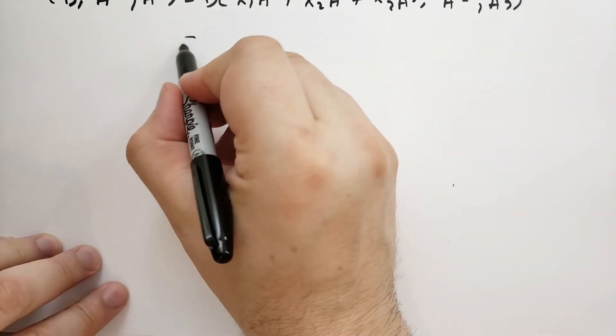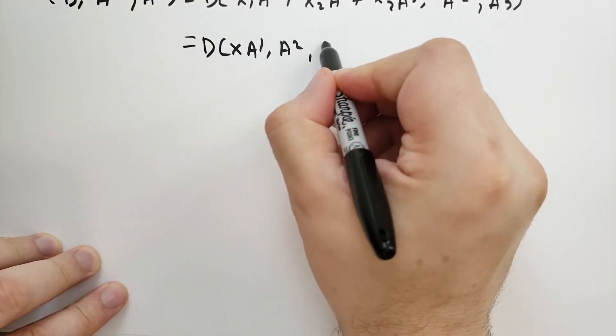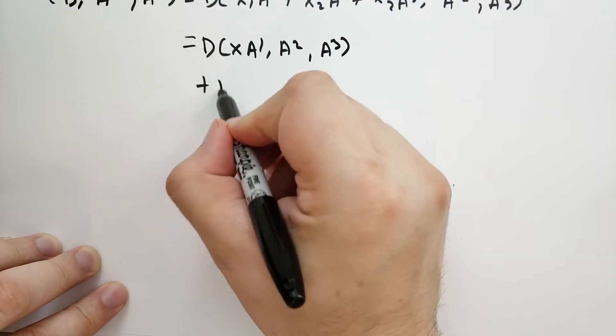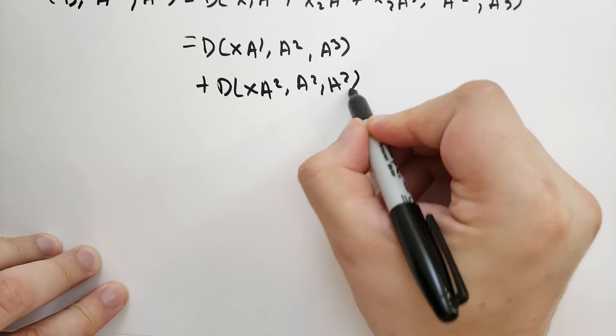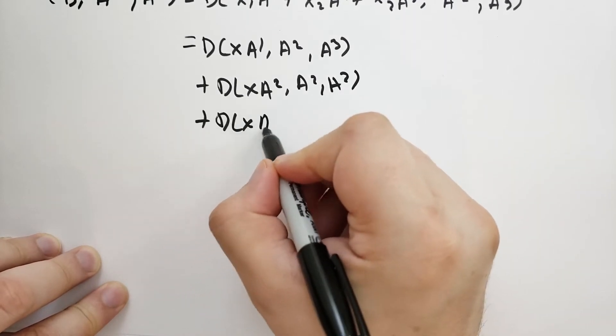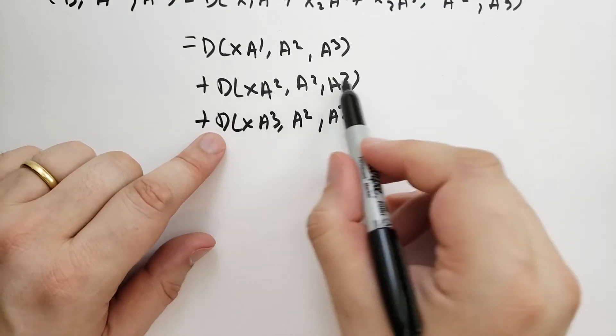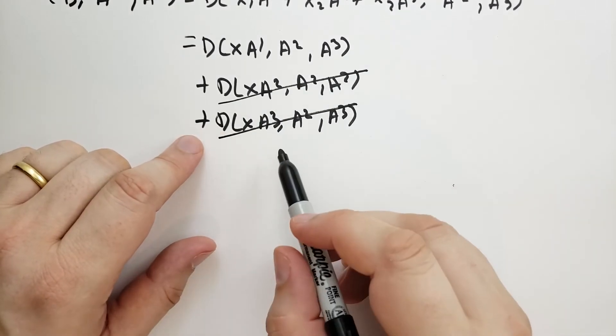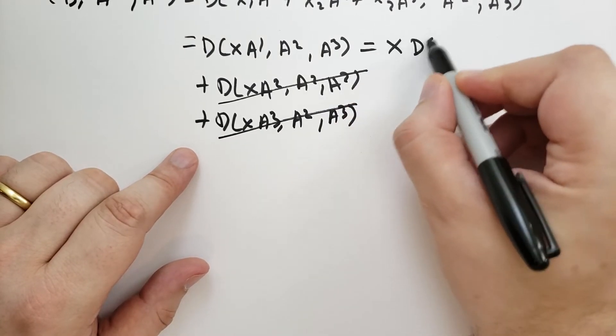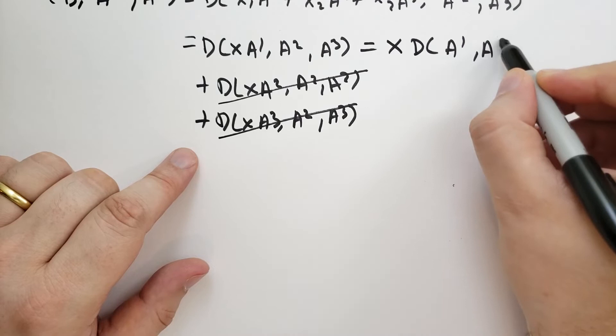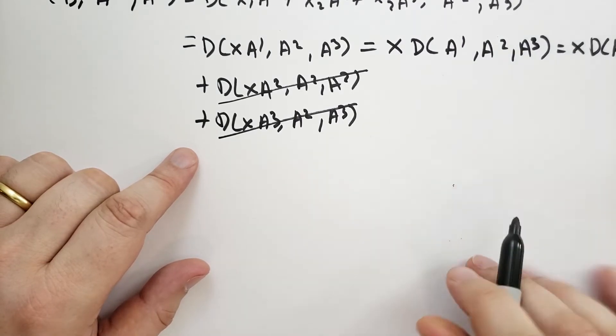Then we see that this equals X1*det(A1, A2, A3) plus det(X2*A2, A2, A3) plus det(X3*A3, A2, A3). These last two determinants are going to be zero because they have the same columns. So we're left with X1 times the determinant of A1, A2, A3, which is just the determinant of the A matrix.